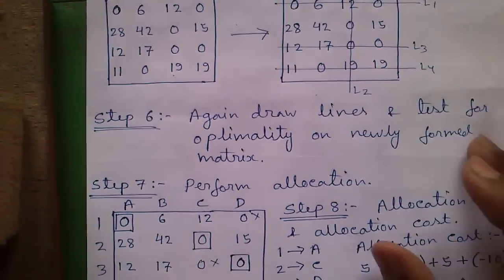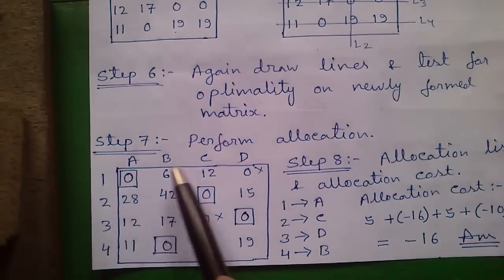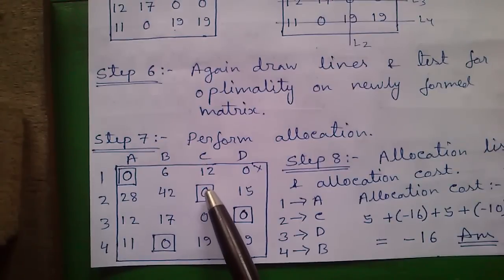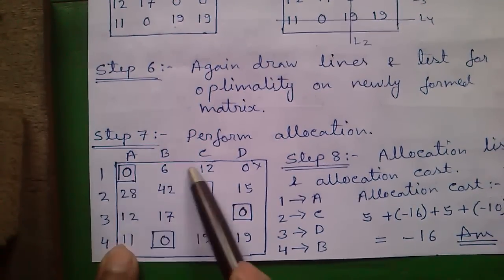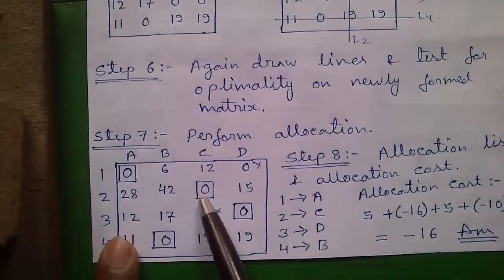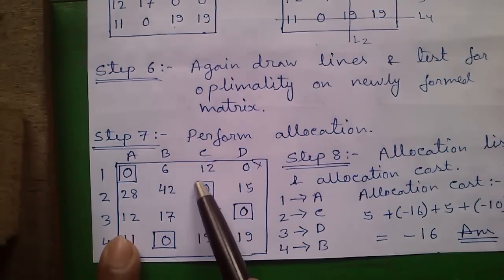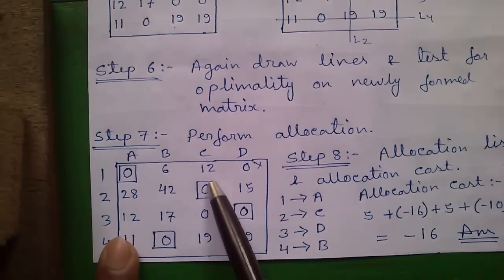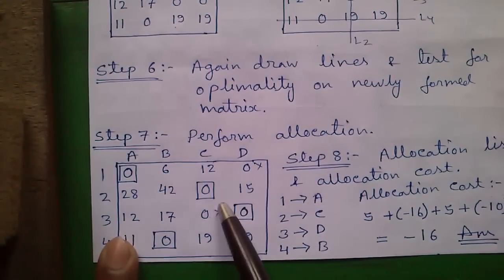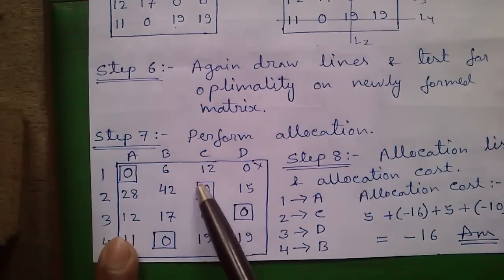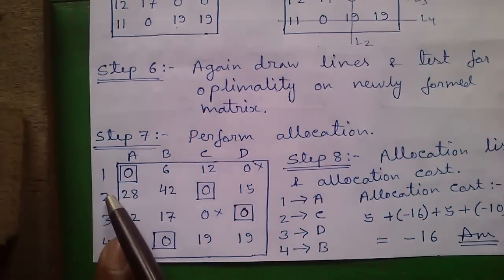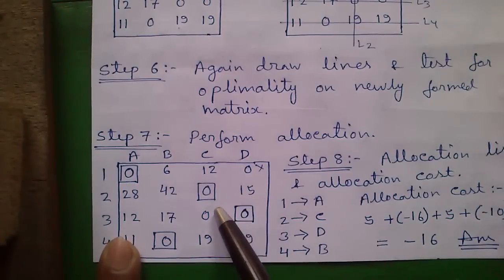Next, perform allocation. For allocation, scan each row and column to find a row or column which has exactly one zero. In row 1 we have two zeros, but in row 2 we have exactly one zero. So we will do our first allocation in this position. Allocation means covering that zero with a box and covering all the zeros along that column and row with a cross. This allocation is done.